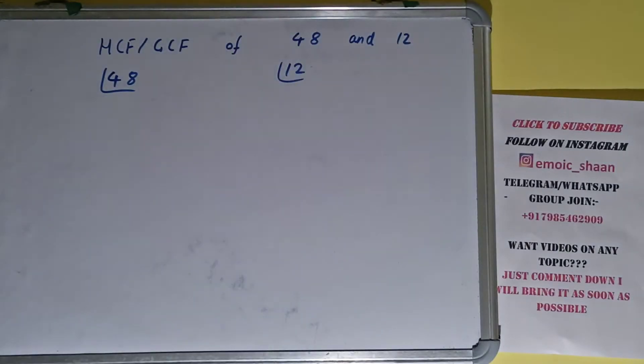And we need to prime factorize each of them. Okay, so we'll start with the number 48 and we'll check with the lowest prime number, that is 2. Is 48 divisible by 2? Yes it is, and we'll have 24.